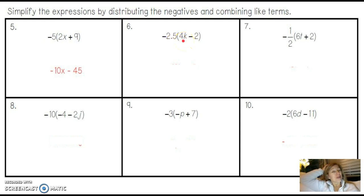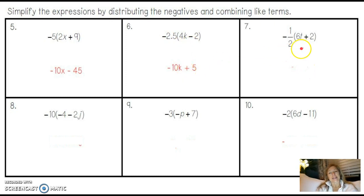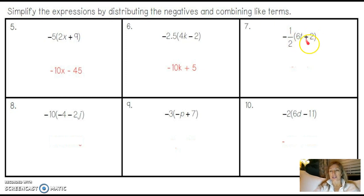2.5 times 4 is 10, but it's going to be negative 10k. This is negative 2, so the product will be positive — 2.5 times 2 is 5, and a negative times a negative makes a positive. Now whenever I have a fraction outside the parentheses, multiplying by one-half is really like dividing by 2. Half of 6 is 3; 6t was positive so my answer is negative 3t. Half of 2 is 1; it was positive so it becomes negative. The answer is negative 3t minus 1.